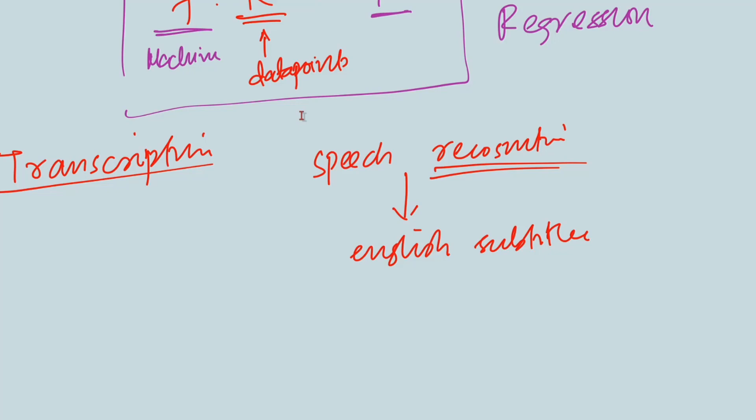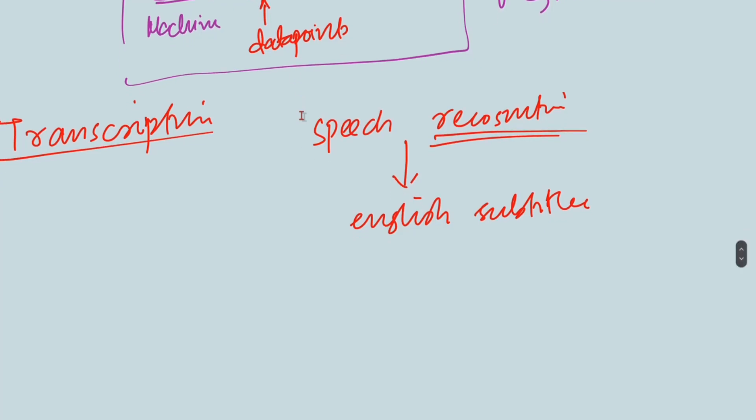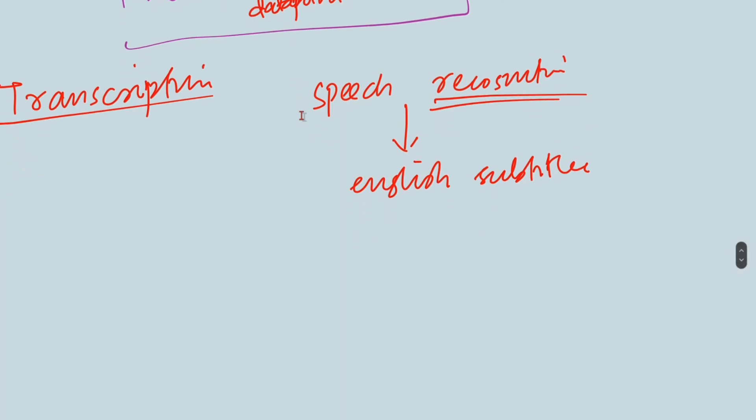There are reverse things as well. For example, if you give a prompt and we can create a video out of it, this is reverse transcription. You are giving something and creating music out of that. So transcription means you have a task where you have something and you want it in textual or some discrete form.